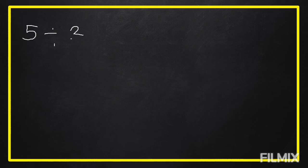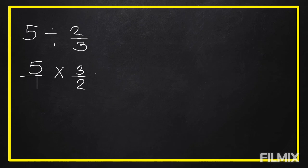Let's try some examples. Five divided by two-thirds. The steps say we put a denominator of one under the whole number. Five over one. Then get the reciprocal of the divisor — two-thirds becomes three over two. Proceed to multiplication: five times three equals fifteen, and one times two equals two.